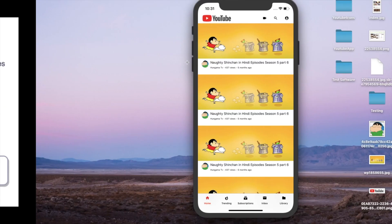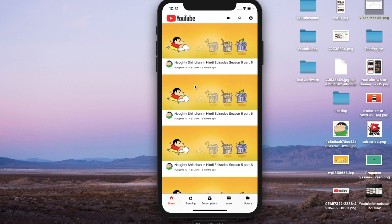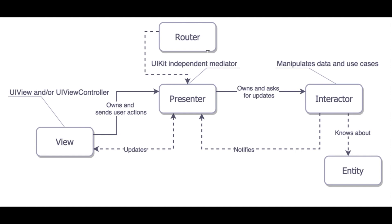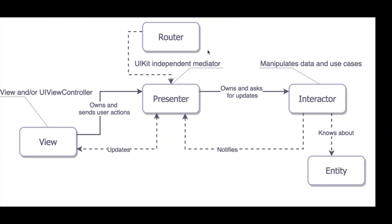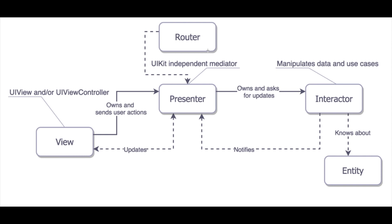If you look at the VIPER diagram, there is a View where the user sees the screen. Taking the example of Home, the view shows some videos. When the user clicks on any cell, it notifies the Presenter that the user wants the details of that video. The Presenter then needs to fetch the data from the API, so it goes to the Interactor and says: I want the details of the video for cell number one, with some parameters.